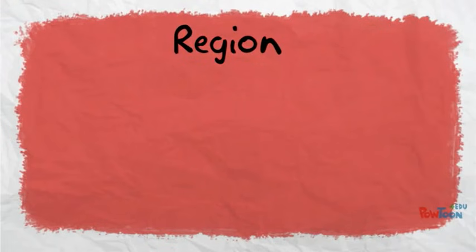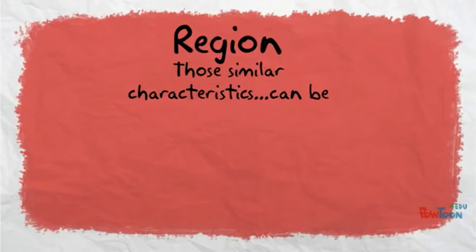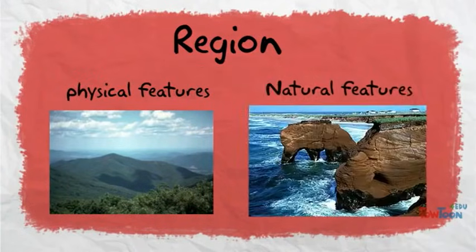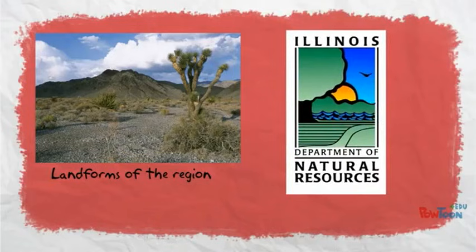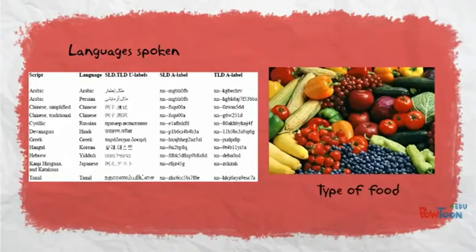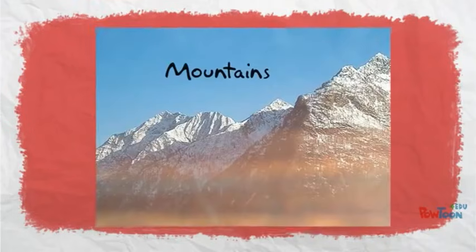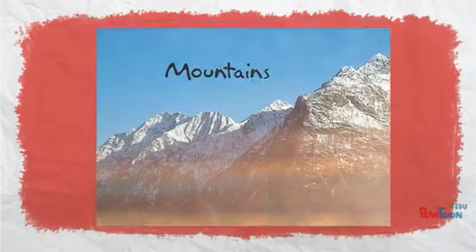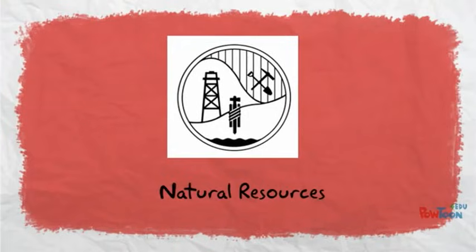Fourth on my list is region. A region is an area that is defined by certain similar characteristics. Those unifying characteristics can be physical, natural, human, or cultural — such as the landform of the region, natural resources found in the region, or even the language or type of food eaten there. The Rocky Mountain region is a large area in the United States. It can be defined as a region because of the mountains located there, the large ranching done there, and all the natural resources that are mined in those mountains.